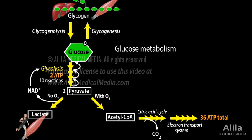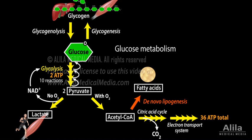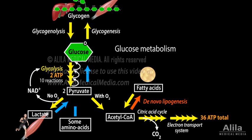When present in excess, acetyl-CoA is converted into fatty acids. Reversely, fatty acids can break down to generate acetyl-CoA during glucose starvation. When blood sugar level is low and glycogen is depleted, new glucose can be synthesized from lactate, pyruvate, and some amino acids, in a process called gluconeogenesis, which is almost the reverse of glycolysis.